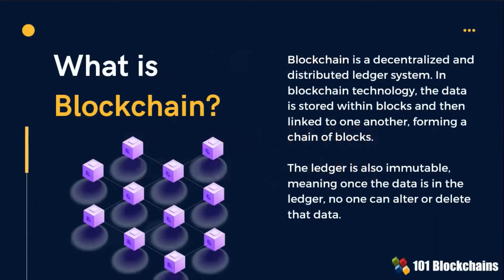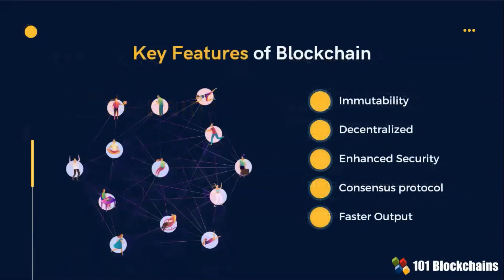Blockchain is a decentralized and distributed ledger system. The ledger is immutable, so once the data is in the ledger, no one can alter or delete that data. There are some key features peculiar to blockchain, and these are immutability, decentralization, and enhanced security.